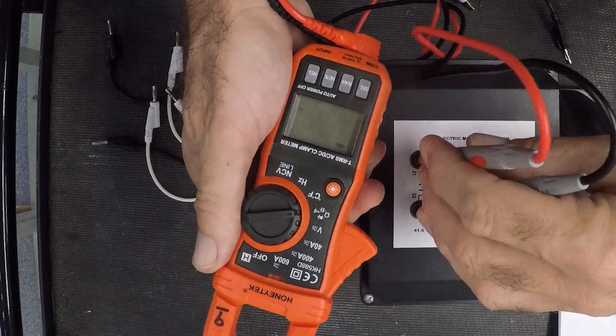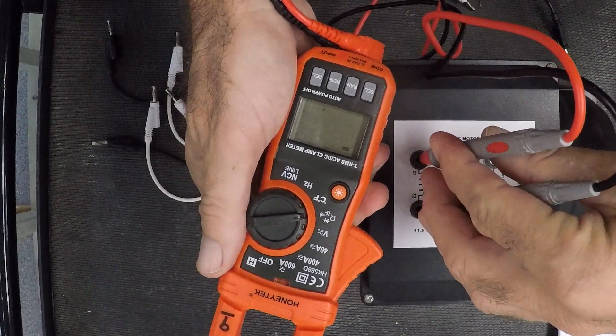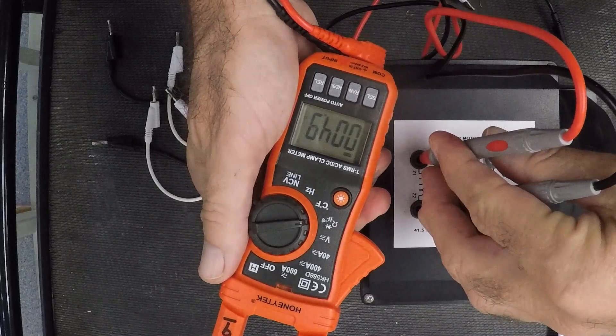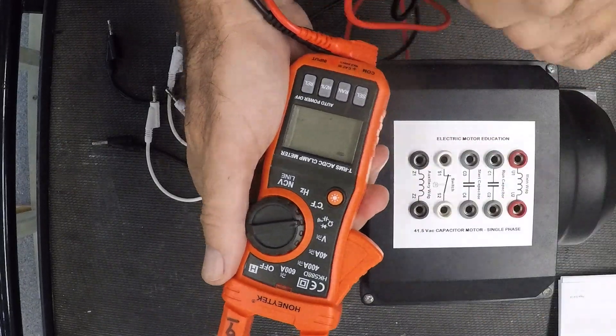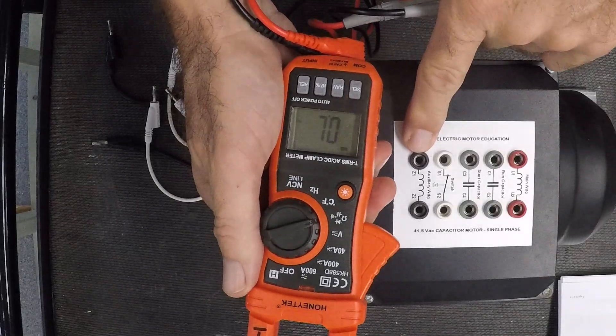My auxiliary should be higher. I get 5 ohms. Now the reason this is higher is because I want to curb that inrush current, so the start windings are always at a higher value.